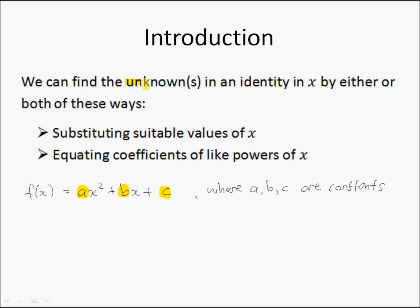These are also known as the unknowns, and we can do that via two methods: the substitution method and the equating coefficients method. To explain this so that you can understand, it will be more appropriate to use some examples.